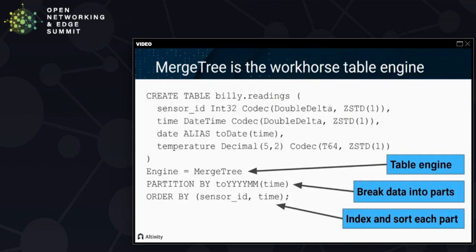Once you get connected to the database, you're going to create tables. With a SQL database, everything is stored in a table, and this is a typical definition for a table of temperature readings. The workhorse engine for large tables inside ClickHouse is called MergeTree — the name comes from the way it merges data in the background. MergeTree engines are broken into pieces called partitions because they tend to be very large. In this example we have 500 billion rows, so we partition by month. We also define an ordering of the data within each part — in this case by sensor ID and time — which helps guide compression and improves search.